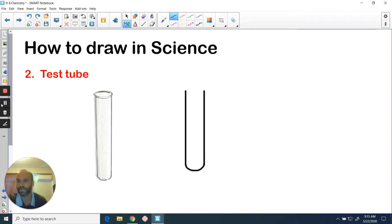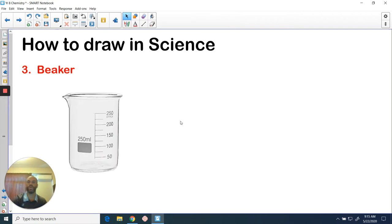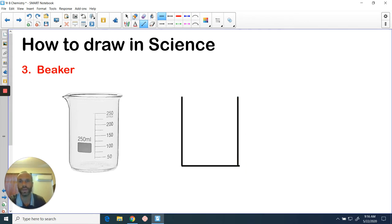Next up we've got a beaker. This is something that you'll be using very regularly indeed. Again, dead simple to draw: three lines and you are done. Let me tidy up that corner a little bit. You don't even need to show the lip here like they're showing there, it's not really necessary. That's what a beaker would look like.